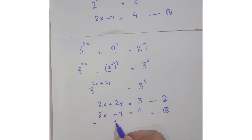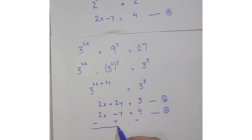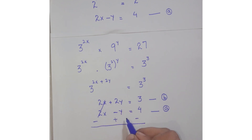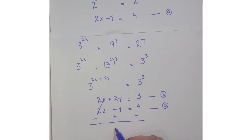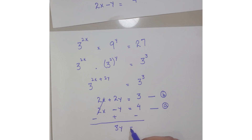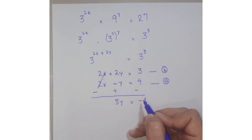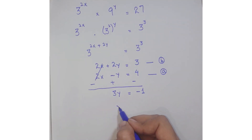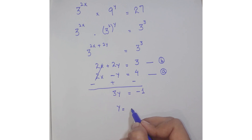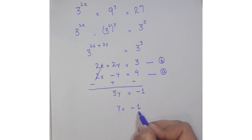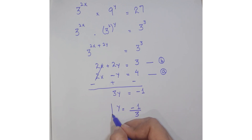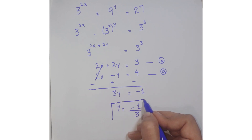Change the signs and subtract. The 2x terms cancel, giving 3y equals minus 1. Therefore y equals minus 1 upon 3.